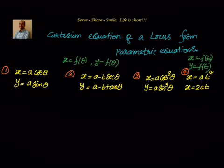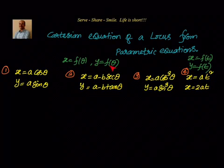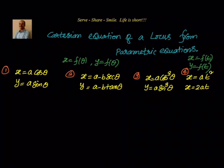Now, what is the meaning of parameter or parametric equation? Cartesian means we will be using only x and y — the x-axis, y-axis, or the ordered pair (x, y). Sometimes, for ease of convenience and solving, we take x and y in terms of another variable which we call a parameter. So x is represented in terms of that parameter, and y is also represented in terms of that parameter. Now, how can we convert that parametric equation of locus back to a Cartesian equation? We have some problems here related to trigonometry and one without trigonometry. Let us go ahead and try to solve them.